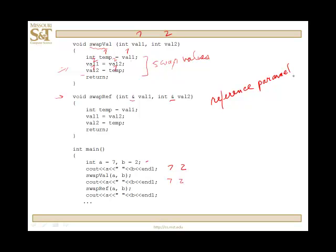When you have a reference parameter, that means that its value back in the calling function can change. What you're doing is you're setting up a reference to the arguments that are passed into those parameters.